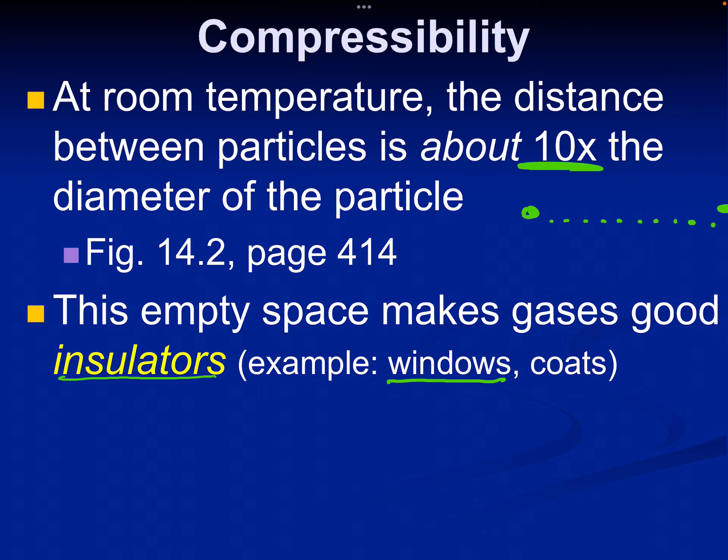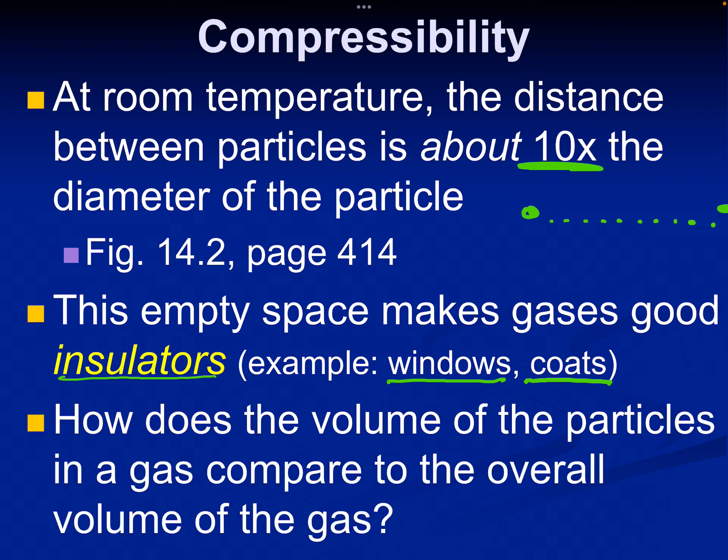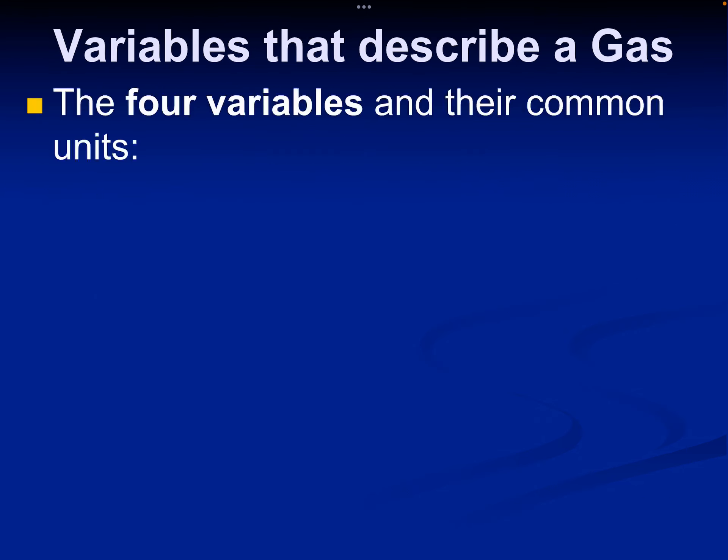The empty space makes gases good insulators. And many of you are familiar with double pane and triple pane windows, and that gas that's sealed in between the windows makes that a very good insulator. Down coats, if you're familiar with goose down, down coats are great insulators. Down sleeping bags are good insulators. Some of you might have seen windows that have some condensation in them that never goes away, and that's because the seal is broken. So we're asked, how does the volume of particles in a gas compare to the overall? And it's itsy bitsy.